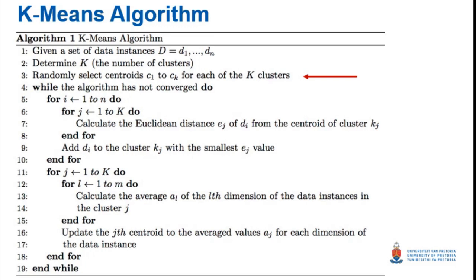Once you have a value for k, you know how many clusters you have, and you must choose a centroid for each cluster. The centroid is randomly chosen from the set D — data instances d_1 to d_n. You don't want to choose the same centroid for two clusters. For example, if k is two, you'd randomly choose two different data instances from D to be the centroids of those clusters.